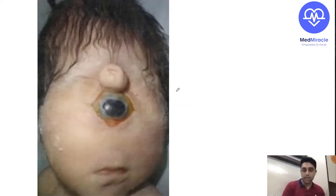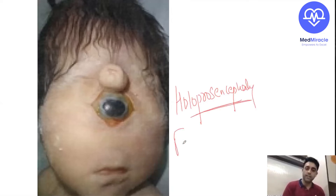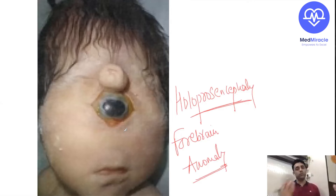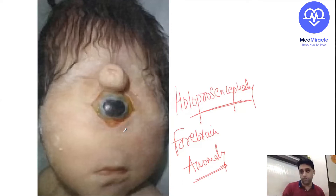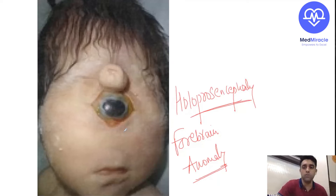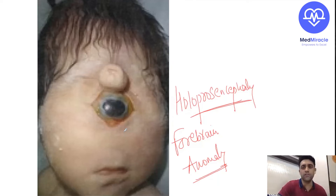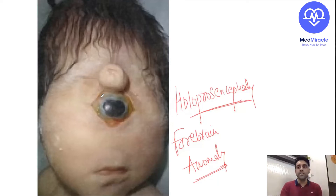Neural tube defects are spina bifida occulta and aperta, meningocele, meningomyelocele, iniencephaly, and others. The image-based question scenarios: one scenario is a spot-on diagnosis. Now the next image — can anyone tell me? This is nothing but rocker bottom feet. The mnemonic is ROCKY M — for trisomy 18, also known as Edward syndrome. Trisomy 13 is Patau syndrome, trisomy 18 is Edward syndrome, and trisomy 21 is Down syndrome.